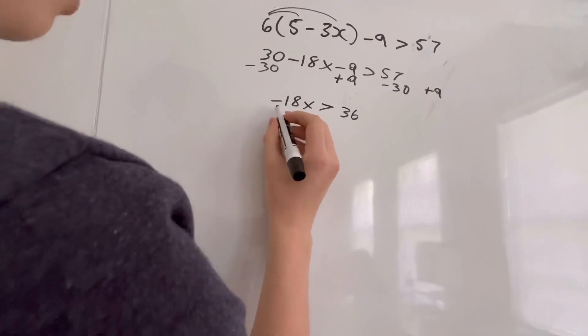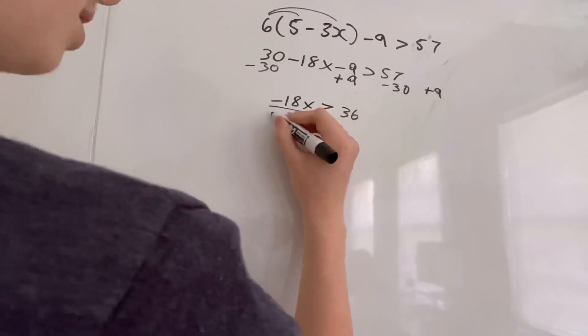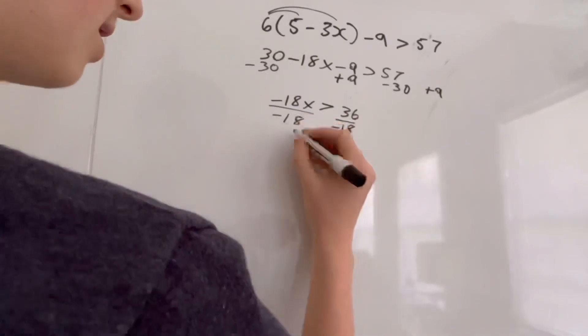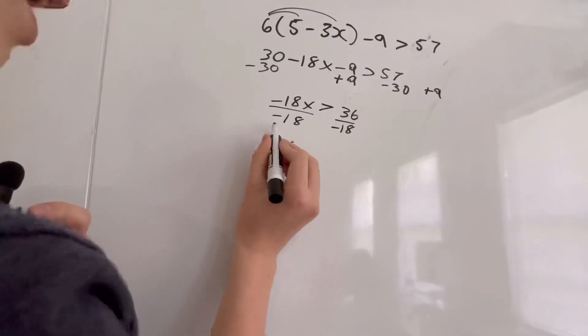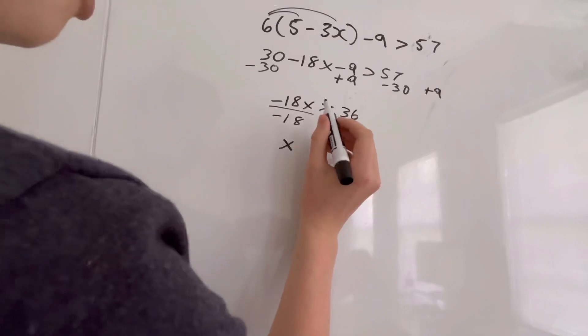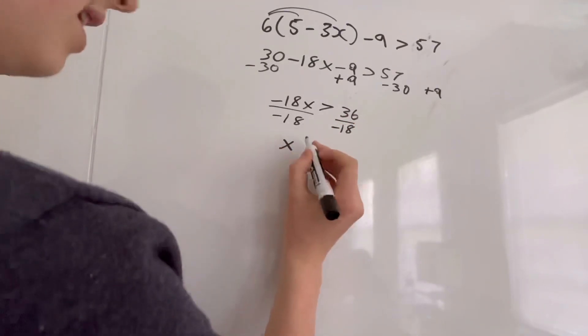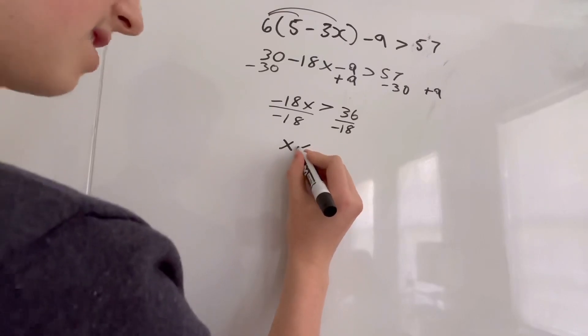So now we have to divide negative 18 by both sides. This would be x, but since we divided by a negative, we have to flip this sign. So this is greater than, but since we divided by a negative, we have to make this a less than sign.